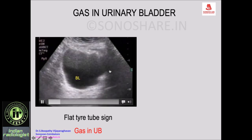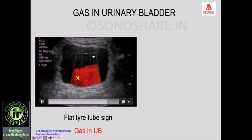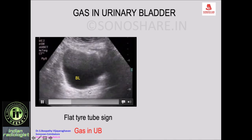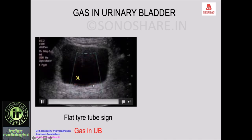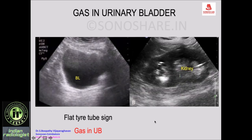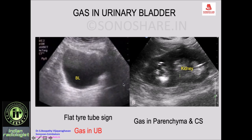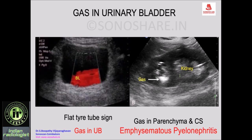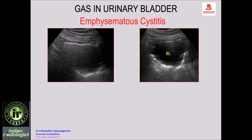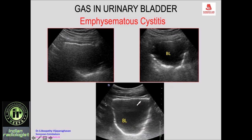Another patient with urinary tract infection: gas in the bladder with the explosion sign and the flat tire tube sign — gas bubbles escaping from the left ureteric orifice. Looking at the kidney, there is gas in the parenchyma and collecting system — emphysematous pyelonephritis — with escaping gas from the kidney into the urinary bladder presenting as the flat tire tube sign. This is acute emphysematous pyelonephritis with gas in the urinary bladder. Emphysematous cystitis with the dipping technique shows gas persisting all along the entire wall of the urinary bladder — very typical in a patient with diabetes mellitus.